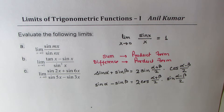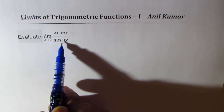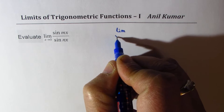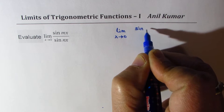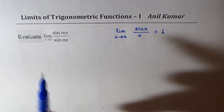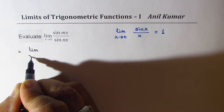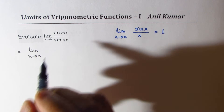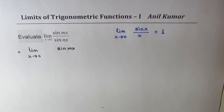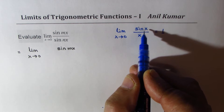Let's begin with part (a). The strategy to evaluate the limit as x approaches 0 for sin(mx) over sin(nx) is to rewrite the expression and utilize the fact that limit as x approaches 0 of sin(x)/x equals 1. We need to get that form somehow. In the numerator, we have sin(mx), so we multiply and divide by mx to get that desired form.